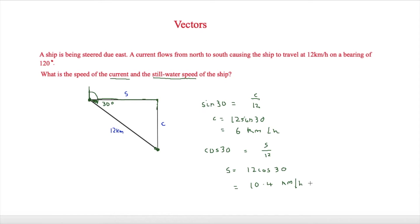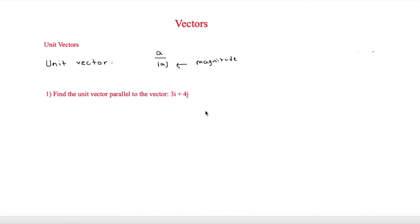That was a vectors question with more context, requiring interpretation. The next topic is unit vectors. Unit vectors have a magnitude of 1 and can be found using the formula a divided by the magnitude of a, where the modulus symbol equals the magnitude. The question asks: find the unit vector parallel to 3i plus 4j. The notation 3i plus 4j means 3 across and 4 up. First, we work out the magnitude using Pythagoras' theorem: root of 3 squared plus 4 squared.